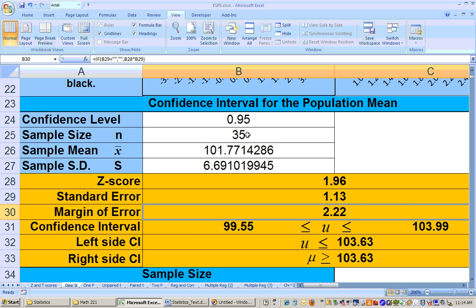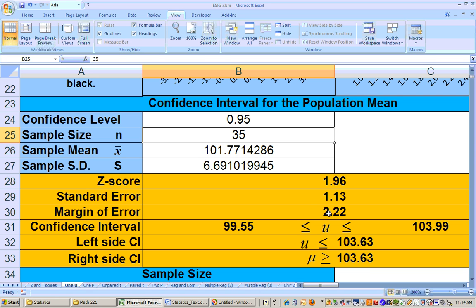And you can mess around with this and see how many more people you need to sample until you get this down to 2 point, until you get this margin of error down to 2 like the problem says.